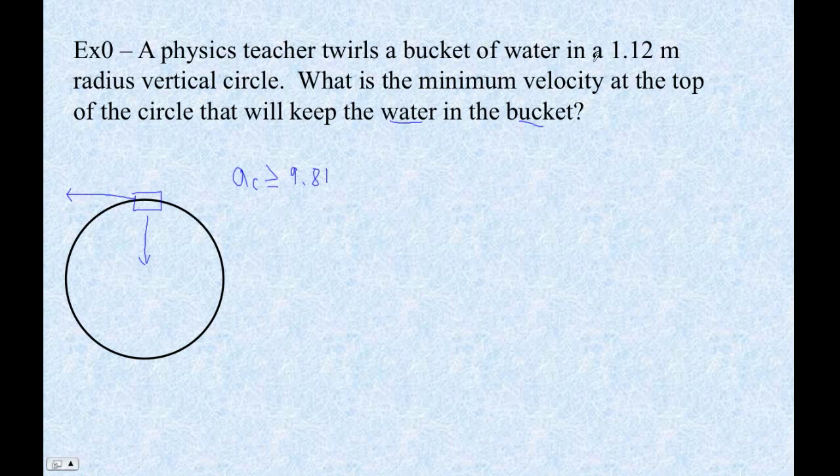So this one's really pretty simple. We've got the radius, and all we do is we just say that the centripetal acceleration, we're going to say the minimum would be that we actually are accelerating down at exactly 9.81. Centripetal acceleration is v squared over r, and then I'm just going to say that equals 9.81. And then our radius is 1.12, so we have v squared over 1.12 is 9.81.